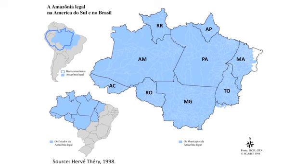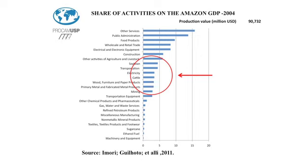This is the Brazilian Amazon region. In this picture we have the Amazon basin. About the economy of the Brazilian Amazon region — the main activities in relation to GDP show that activities with a big impact on the environment have considerable importance in the Amazon economy, such as mining, agriculture, livestock, cattle, soybeans, and sugarcane.